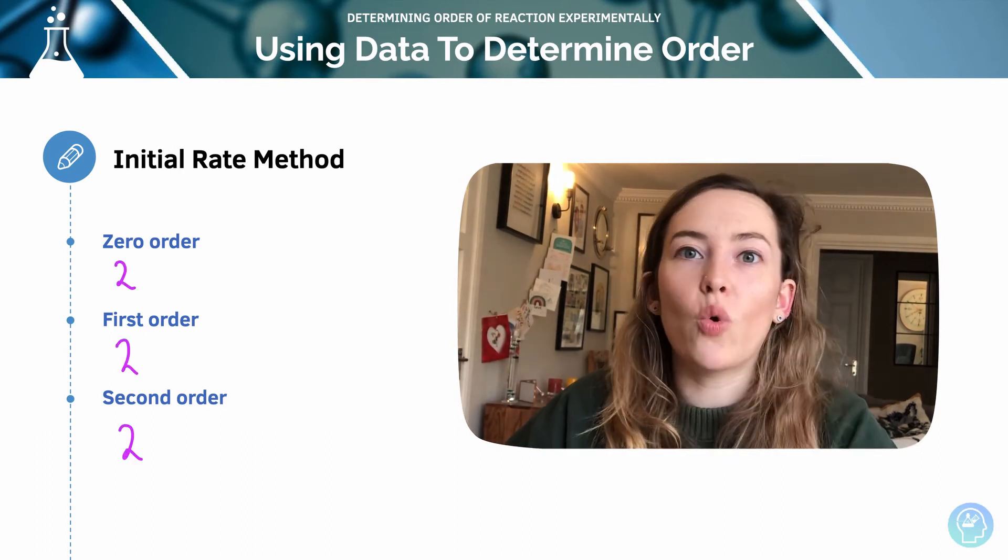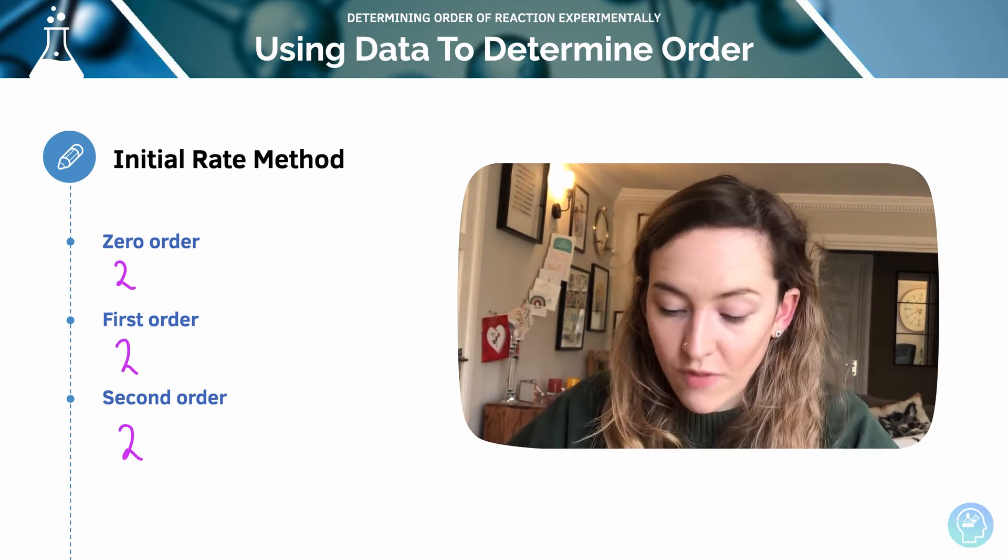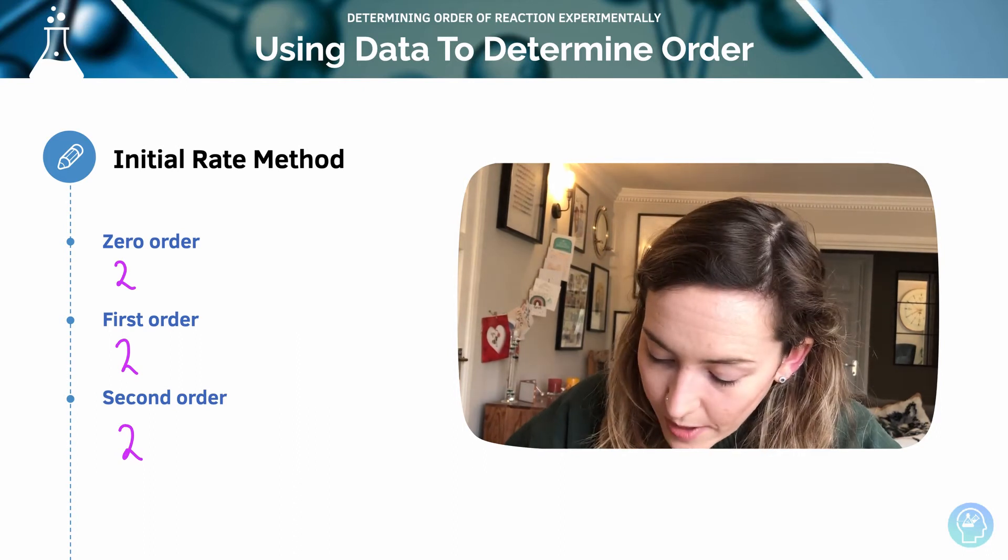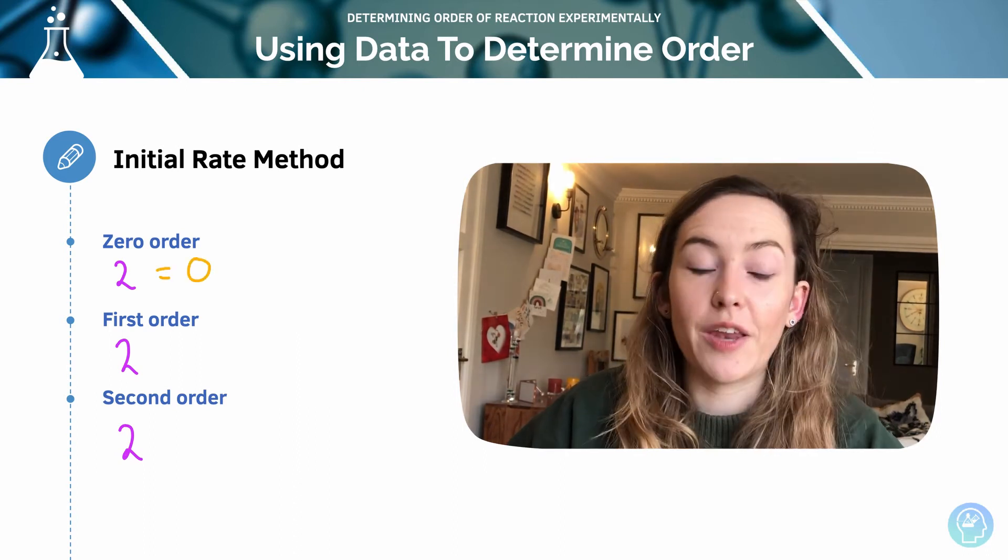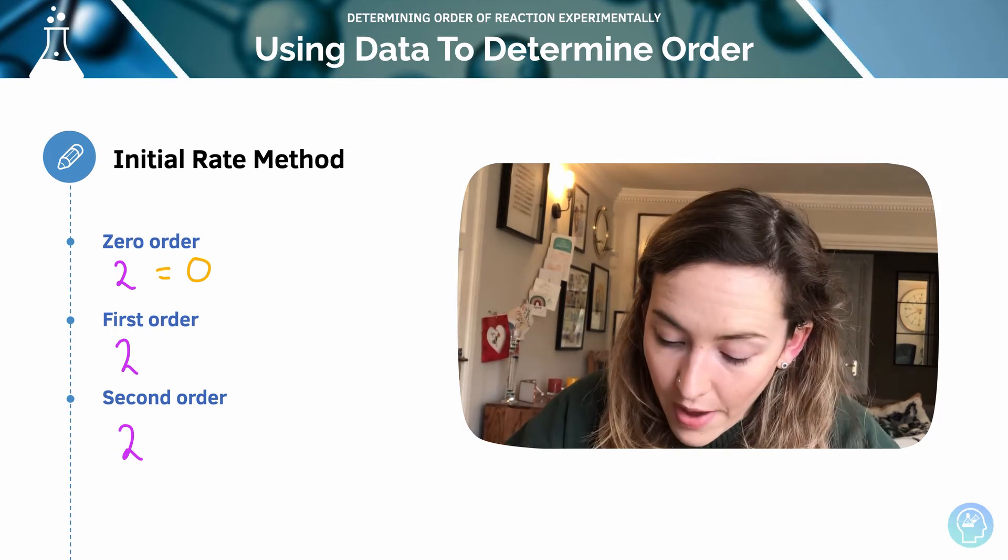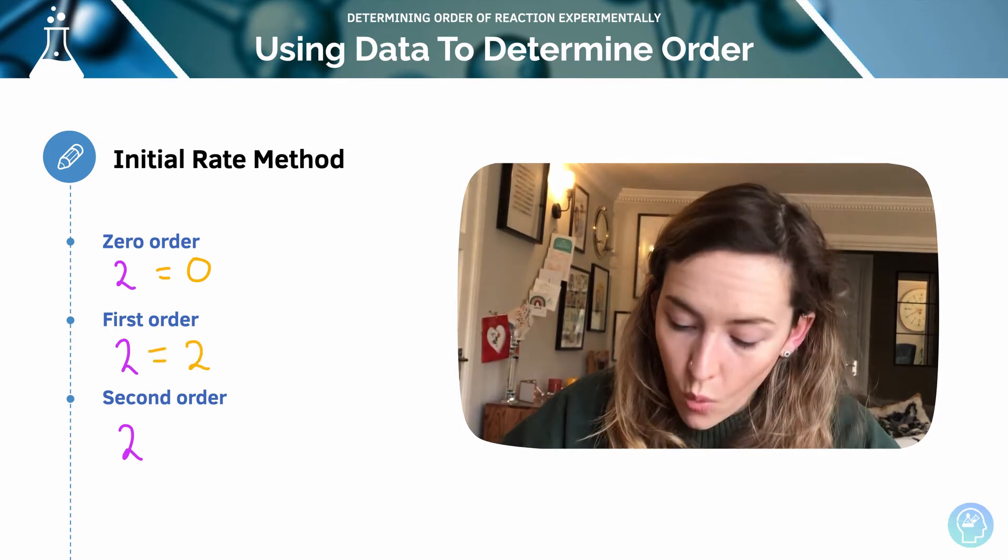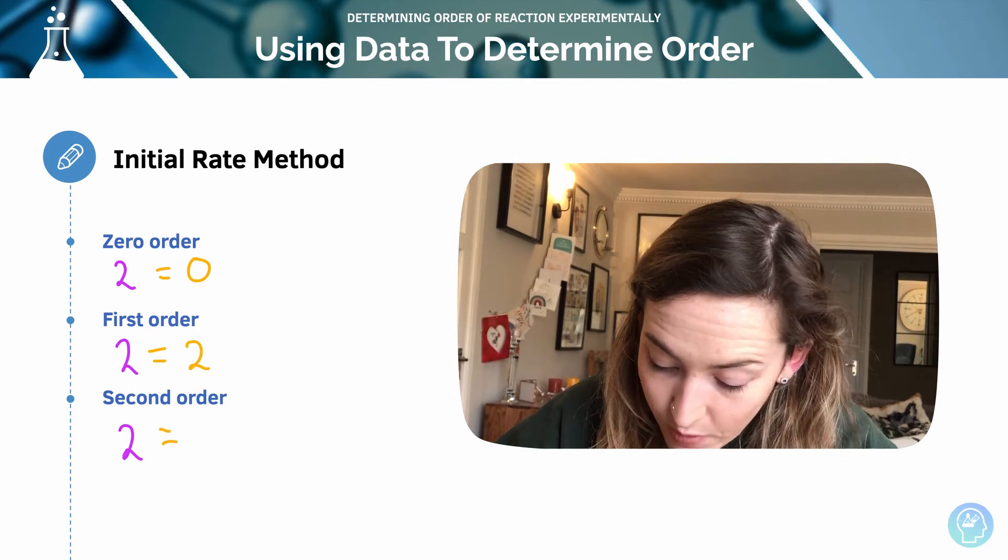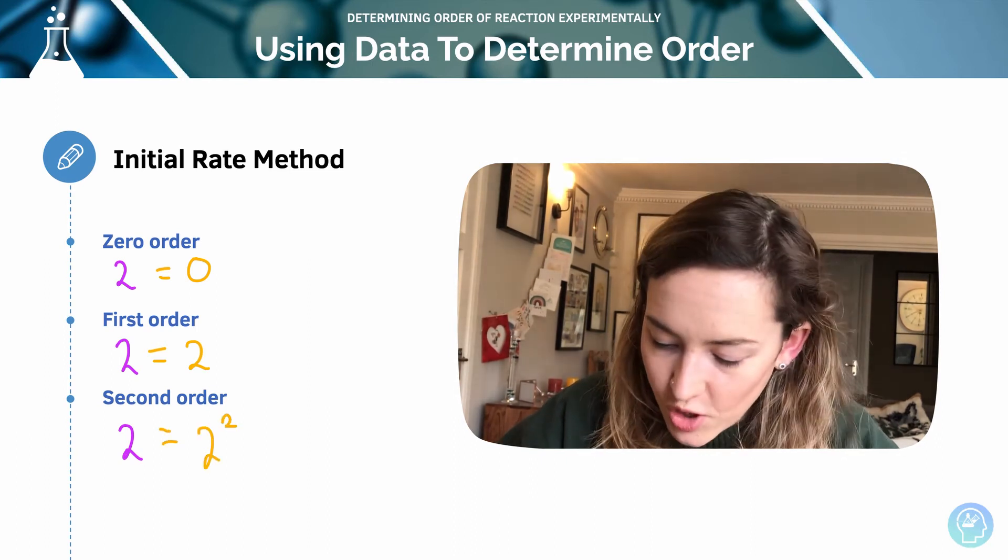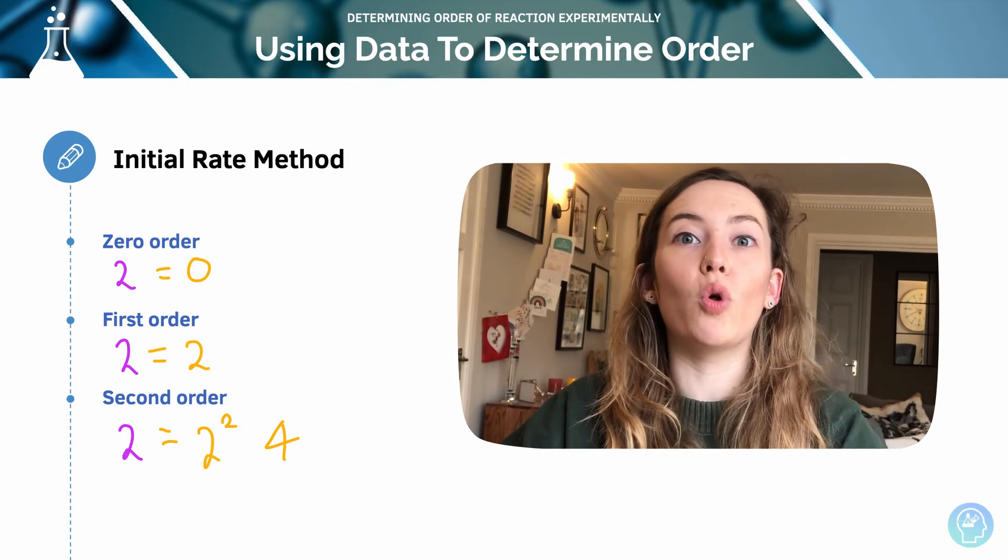So here, I'll quickly summarize it. If I double it, that's why I've got twos there at zero order, then I'll get no change in my rate of reaction. Whereas first order, it would also double. Whereas with second order, we would get two to the power of two, so we'd get it being quadruple the rate.